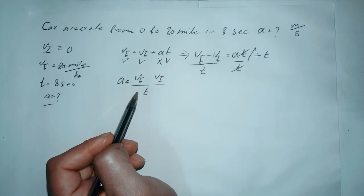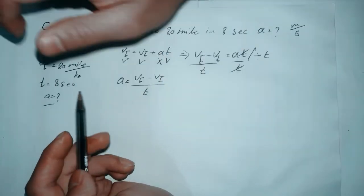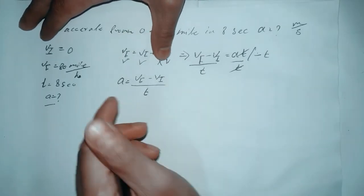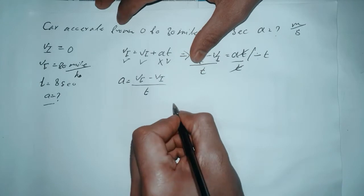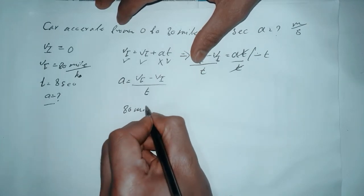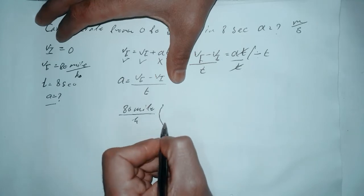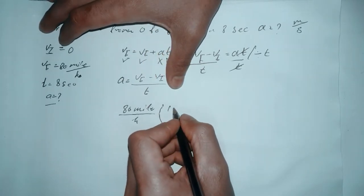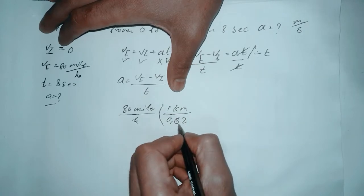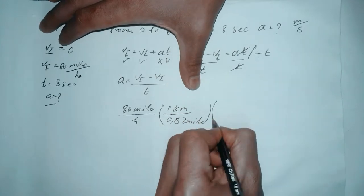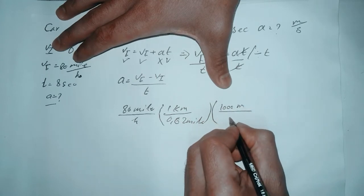Before we put all these values into the formula, we have to convert the final velocity from miles per hour to meters per second. So we have 80 miles per hour. We use the conversion: 1 kilometer equals 0.62 miles, and there are 1000 meters in one kilometer.